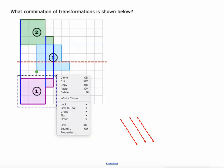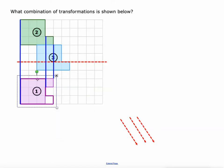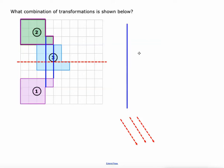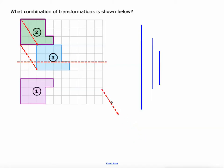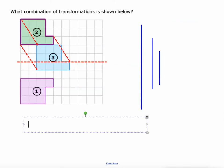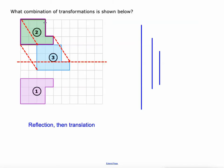So what I'll do is take this figure and flip it over that line. Then I'm going to take these red lines to show how figure two turning into figure three is a translation, because all of those vertices are moving the same distance in the same direction. So our answer here is a reflection then a translation.